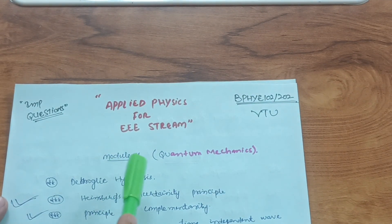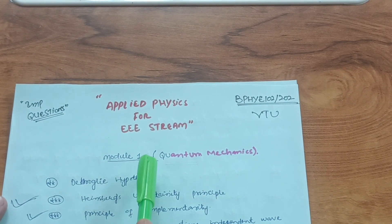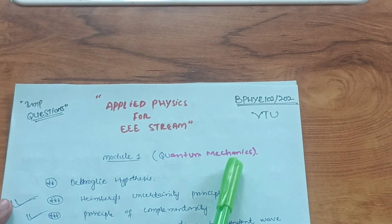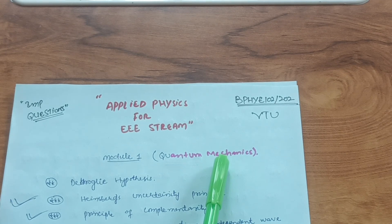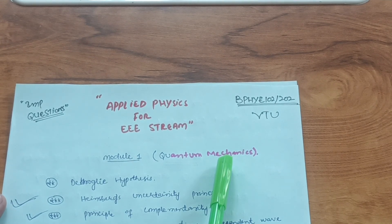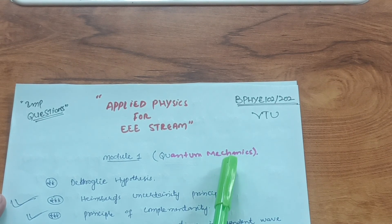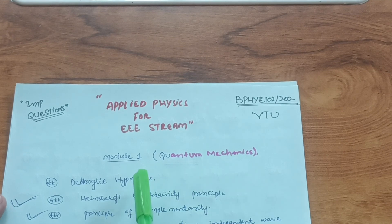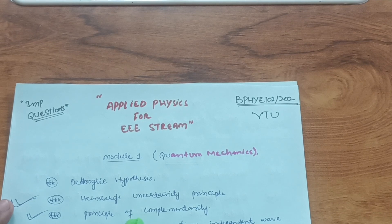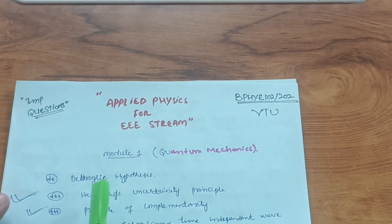Without wasting time, let me share some important hacks. Module 1 covers quantum mechanics, which has a vast syllabus. It's very difficult for engineering students to cover everything given the burden of internal examinations. So I've identified the most important questions by which you can score or pass easily in this subject.